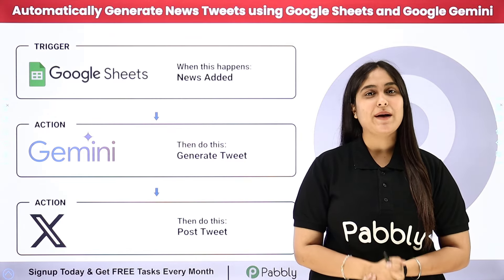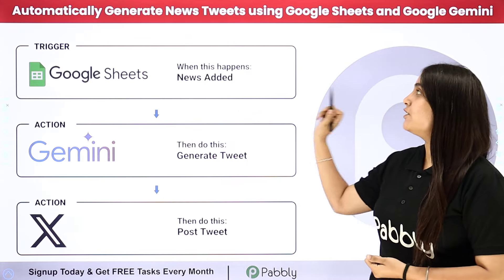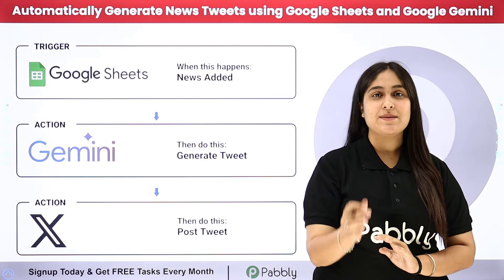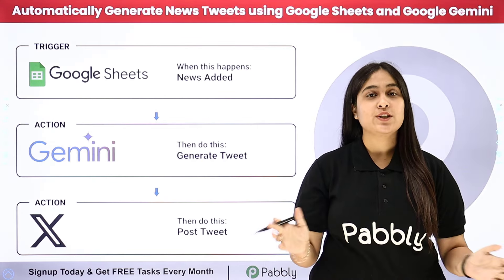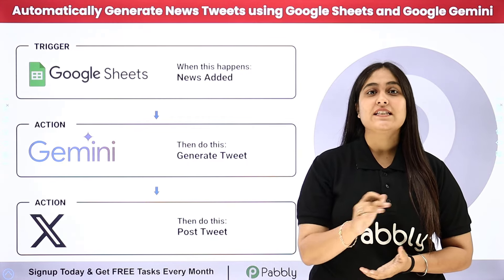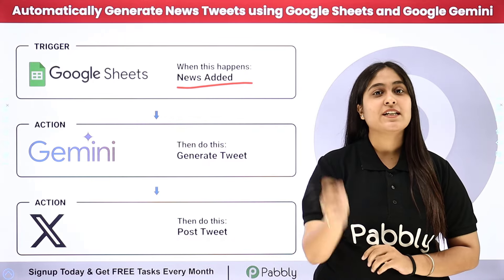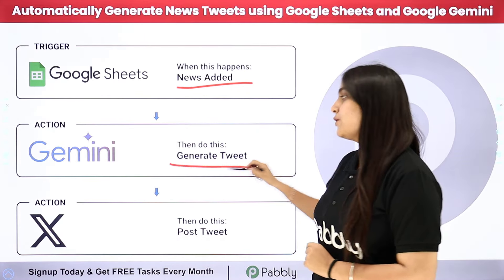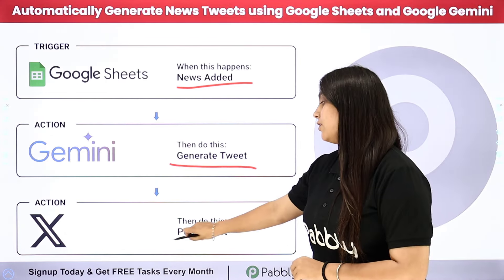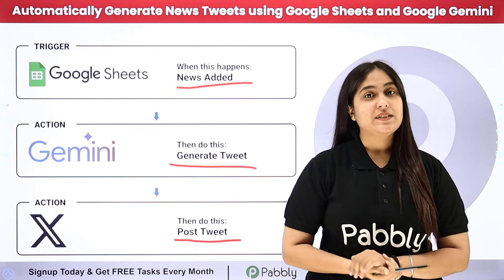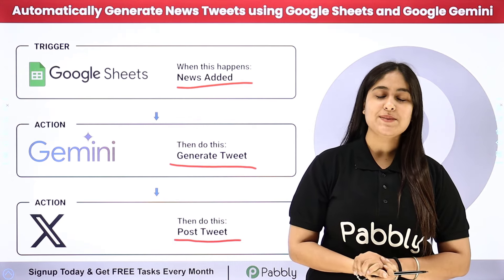Hello everyone, welcome back to Pabbly. In this video we are going to learn how to automatically generate news tweets using Google Sheets and Google Gemini. I handle an X account on which I post educational news related tweets. Whenever a new news is added in my Google Sheets, automatically using those details, a tweet should be generated using Google Gemini and then automatically posted on my X account. To build this connection, I need to connect these applications using an automation software named Pabbly Connect.